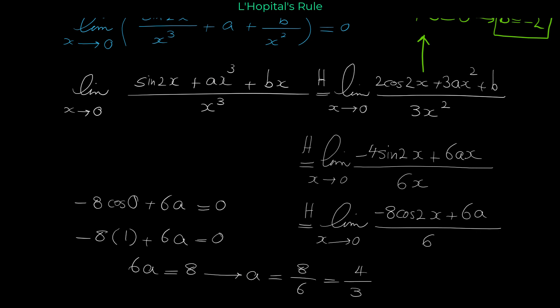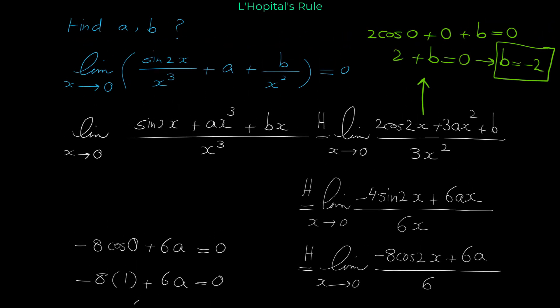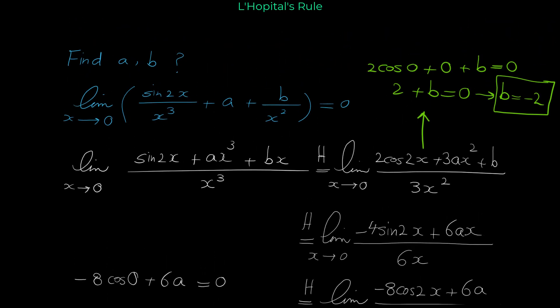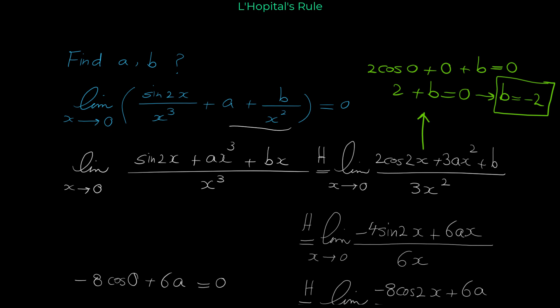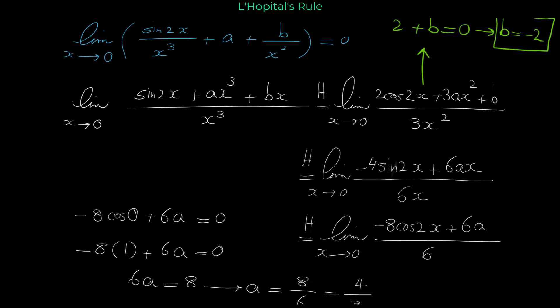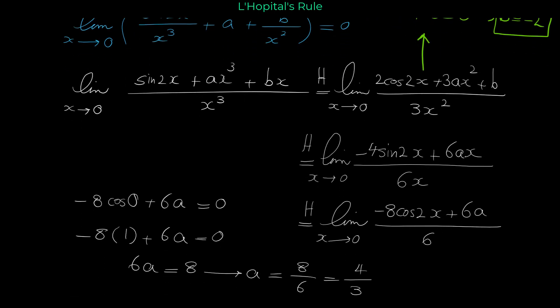So if a equals 4 over 3 and b equals negative 2, then the limit of this expression as x approaches 0 equals 0. I hope you like this video — see you in the next videos.